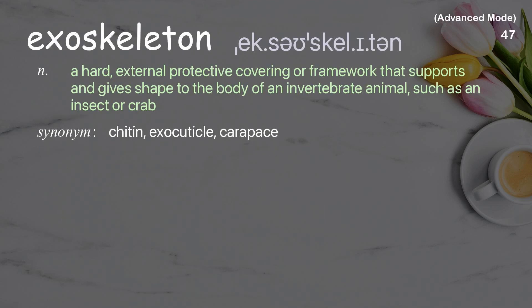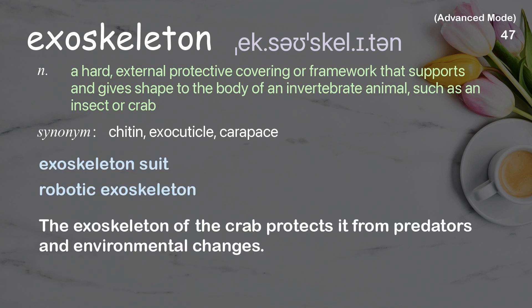Exoskeleton: a hard, external protective covering or framework that supports and gives shape to the body of an invertebrate animal, such as an insect or crab. Examples: exoskeleton suit, robotic exoskeleton. The exoskeleton of the crab protects it from predators and environmental changes.